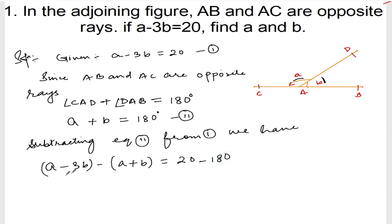Right? A minus 3B minus A minus B is equal to 20 minus 180, which is negative 160. And a minus sign will come here. Now A and A cancel. Minus 3B minus B, it will be minus 4B is equal to minus 160.